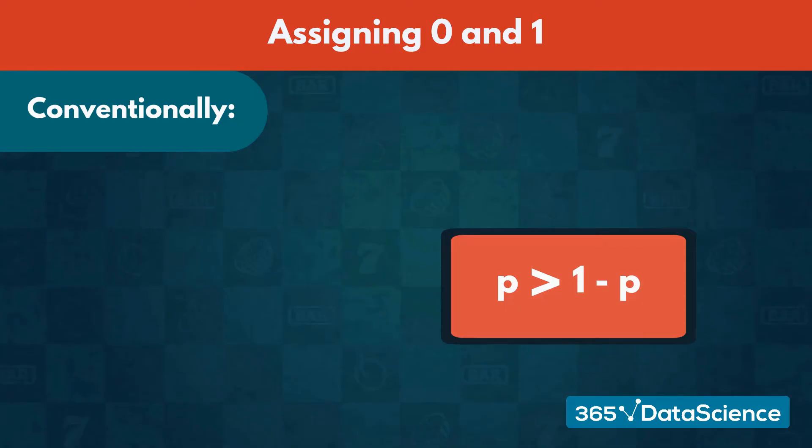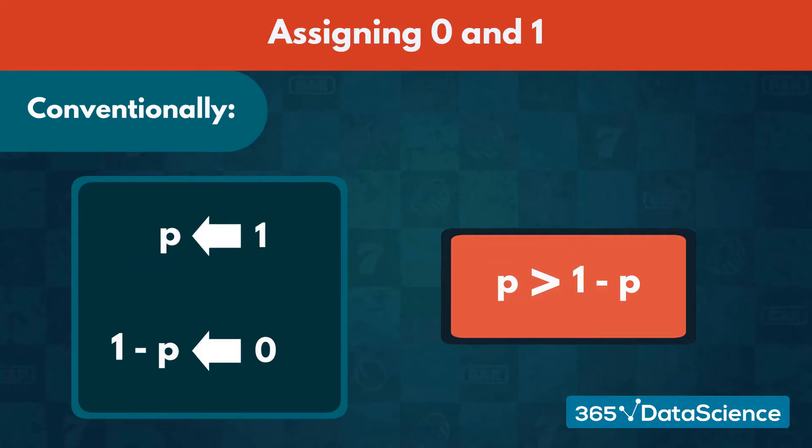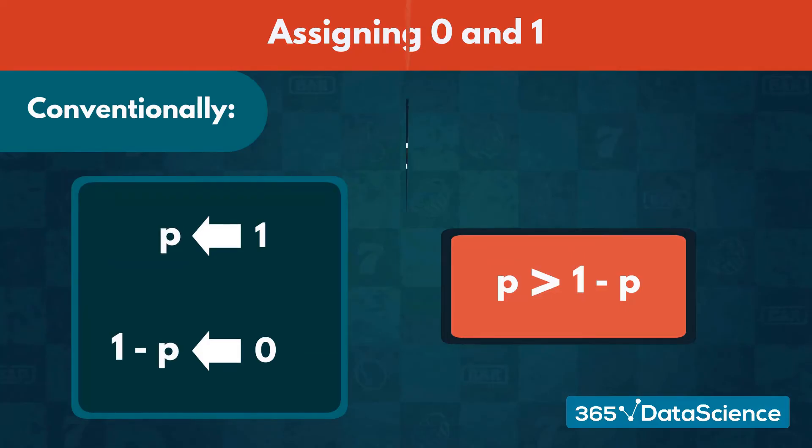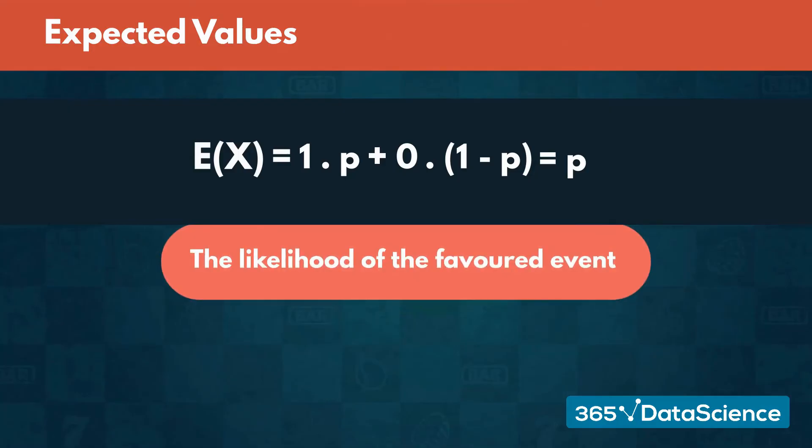Furthermore, conventionally we also assign a value of 1 to the event with the probability equal to p. That way, the expected value expresses the likelihood of the favored event.